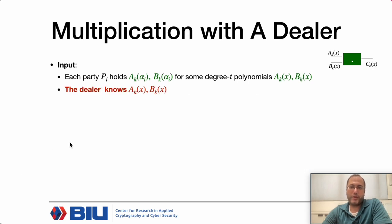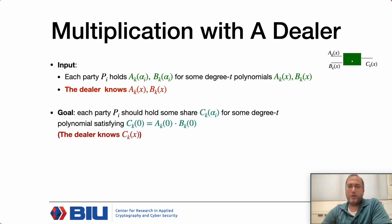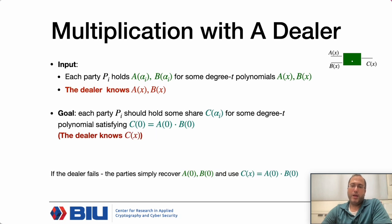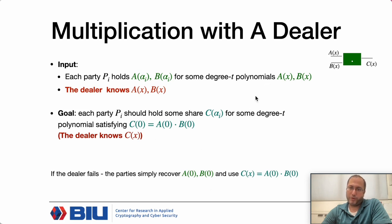Multiplication with a dealer is the following functionality. Each party P_i holds a share on some polynomial, and there is a dealer P_k who also knows the two polynomials A_k(x) and B_k(x). The goal is that P_i will hold a share C_k(α_i) for some degree-t polynomial whose constant term is the product of those two polynomials, and the dealer knows C_k(x). If the dealer fails, the parties simply recover the constant terms of the two shared polynomials.